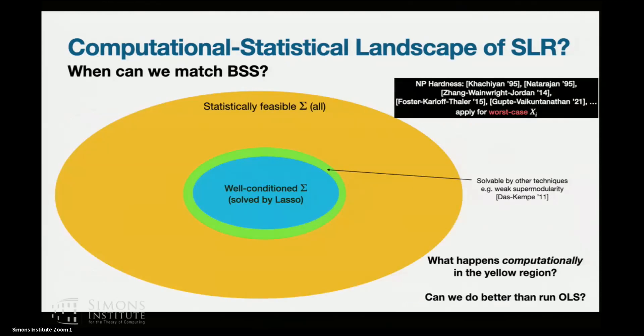But it kind of leaves us with this picture, right? Because we know that the problem is actually statistically possible just for any sigma. When the condition number is constant, we can solve it with LASSO. People worked very hard to generalize that. So there's a technique called weak supermodularity, which can extend the set of sigma a little bit beyond that. And there's also different notions of what a well-conditioned matrix is. But basically, the picture is we can solve it for the well-conditioned ones, and we don't know what happens for the general sigma.